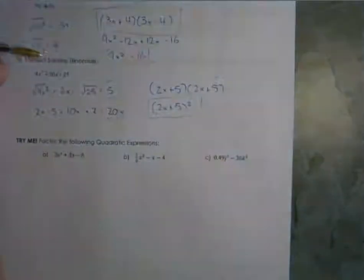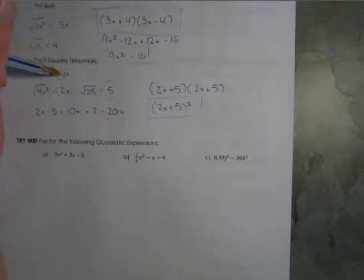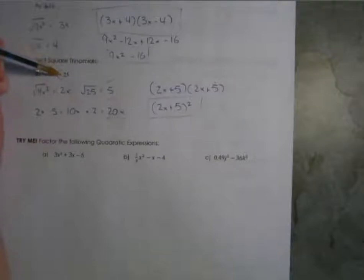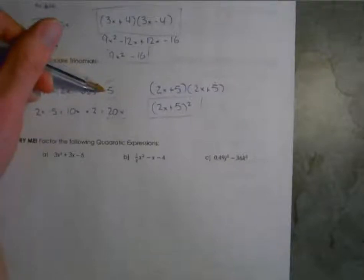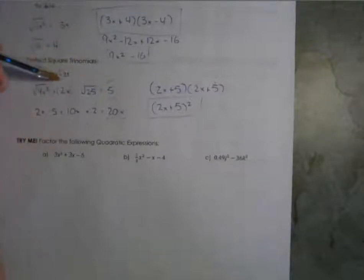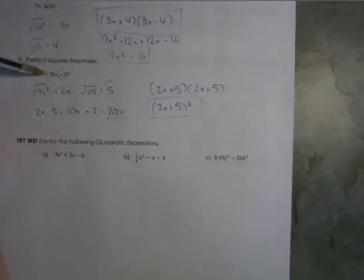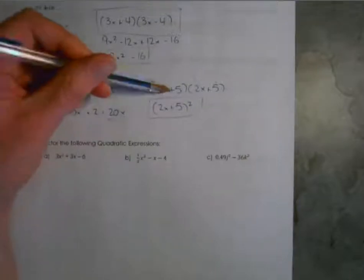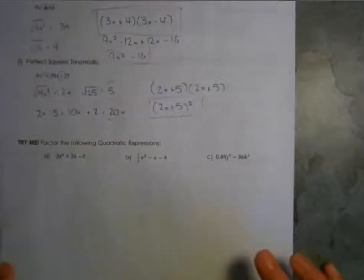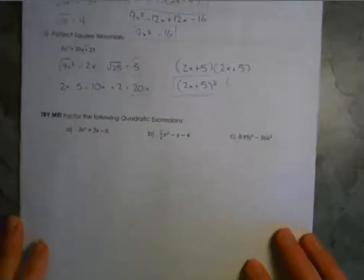If it had negatives, you can still use the same approach — you just need to figure out the signs. If you had a negative in the middle, it generally means you'd have something like negative 5 times negative 5, because the squared term always has to be positive. If the last number is negative, just be aware you'd need minuses in the brackets.